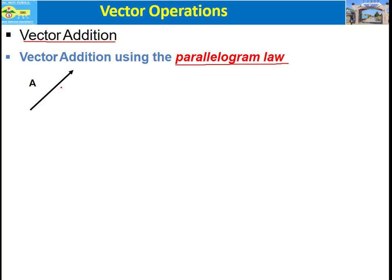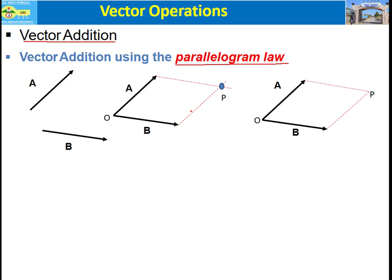Let's say we have vector A and vector B in arbitrary directions. To add vector A to vector B using the parallelogram law, the first step is to connect vector A to vector B tail to tail. Next, construct parallel lines to vector A and to vector B to complete the parallelogram shape. The resultant vector is the distance from point O to point P. Mathematically this can be expressed as R equals vector A plus vector B.